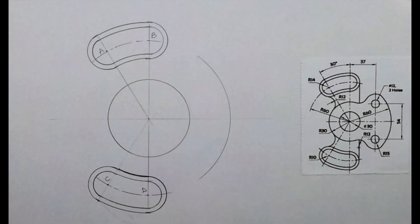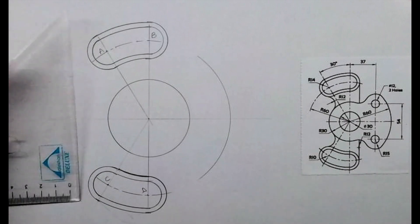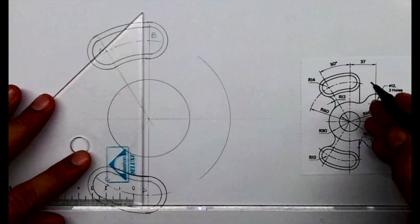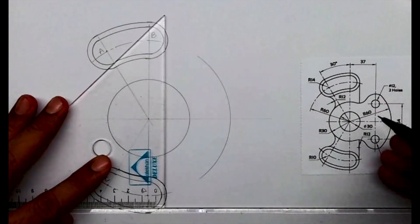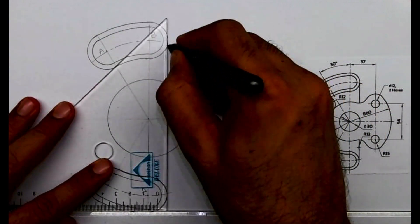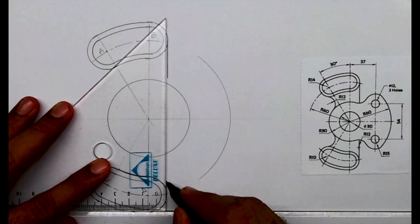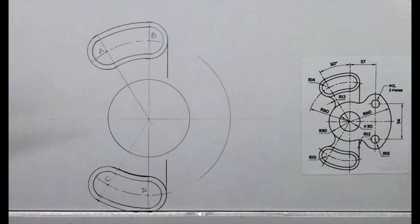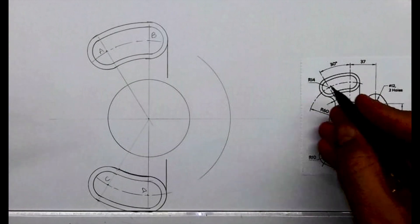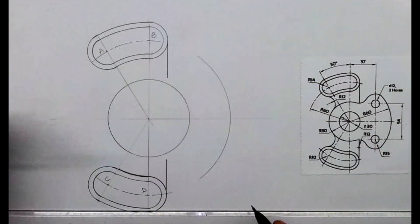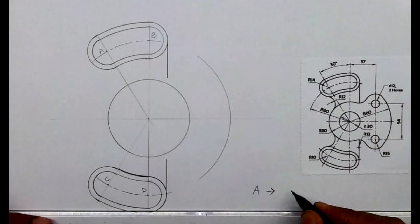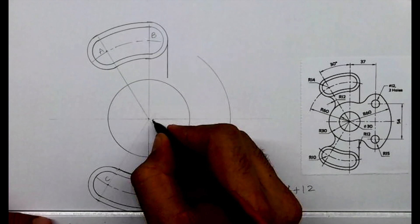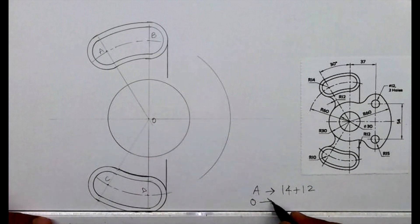The radius is 60. Now we'll start from radius 12, which is external. First I will draw this vertical line. From A I will cut 14 plus 12, and from O I will cut 30 plus 12.